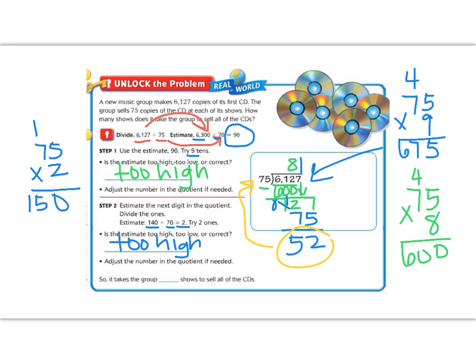So let's look at our question now. It says it takes the group blank shows to sell all of the CDs. Well, our quotient was 81 with a remainder, but we don't want to know how many it takes them to sell 81. We want to know how many it takes them to sell all of the CDs. So remember, back to our last lesson, we need to round up our answer. So it's going to take them 82 shows to sell all of their CDs.